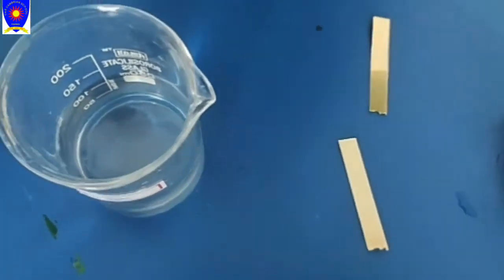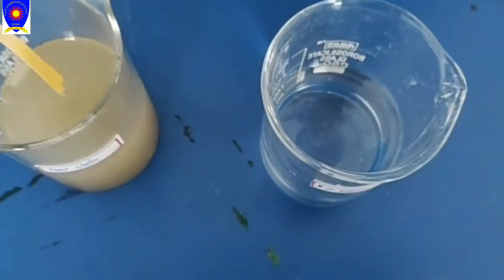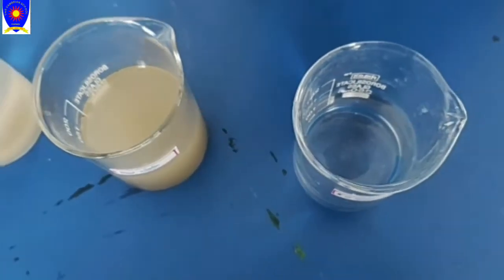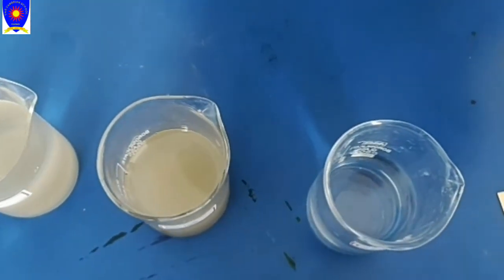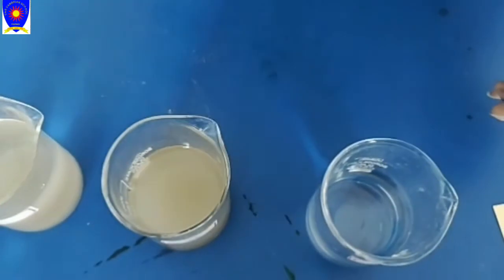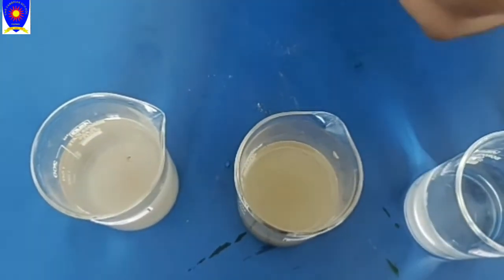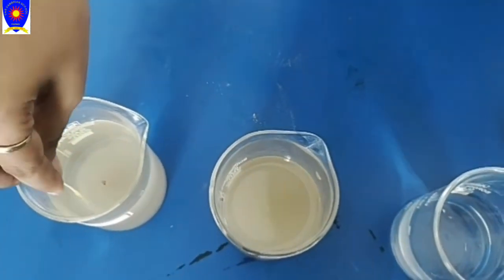Now we will take another pH paper. It's changing exactly. The pH strip, you just take the third strip and dip this into the water.